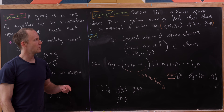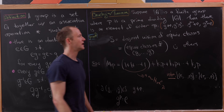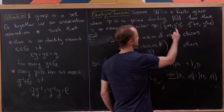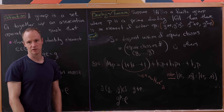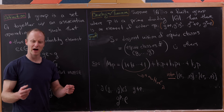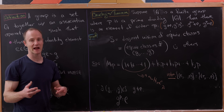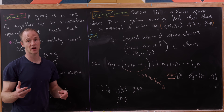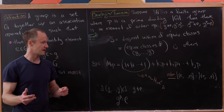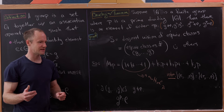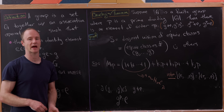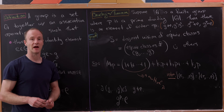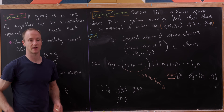How do we know no smaller power of G equals the identity? That's covered by Lagrange's theorem, which perhaps we'll look at later. And that's a good place to stop.